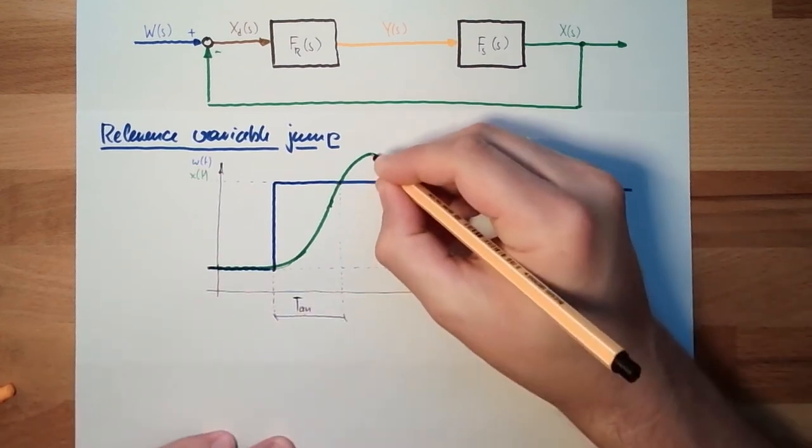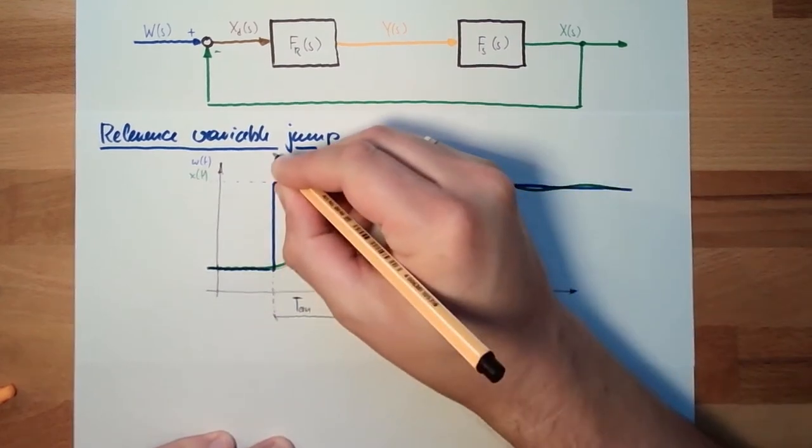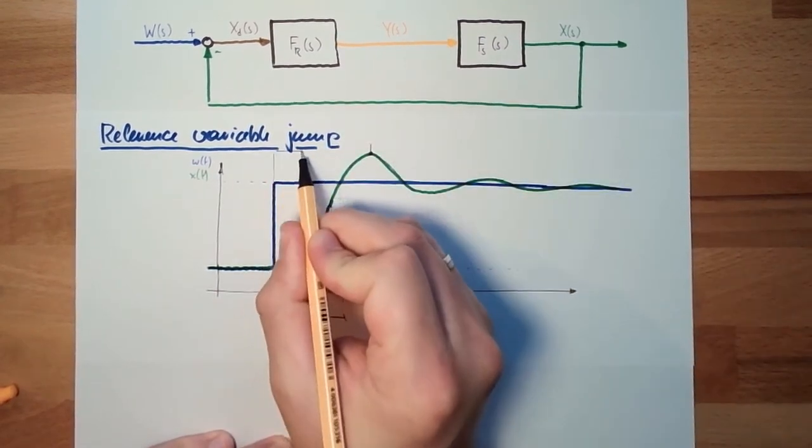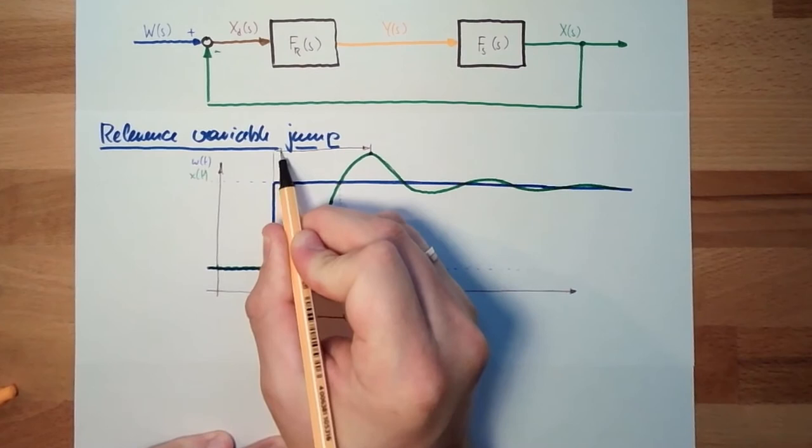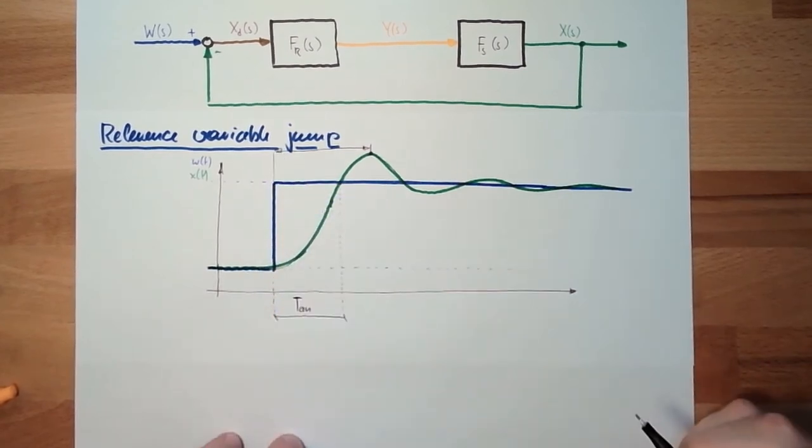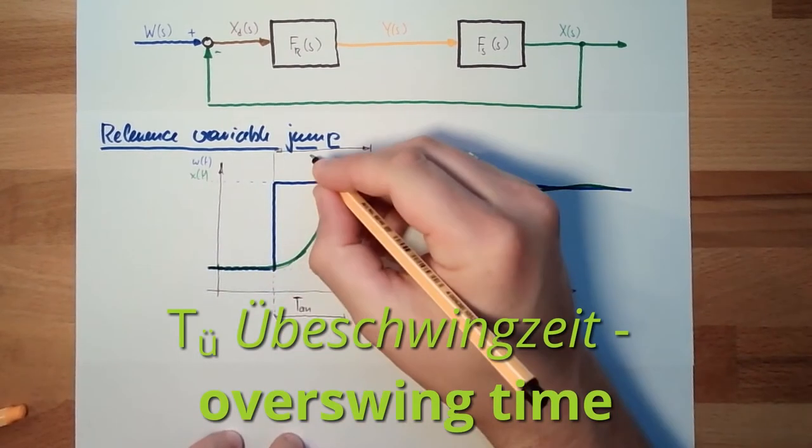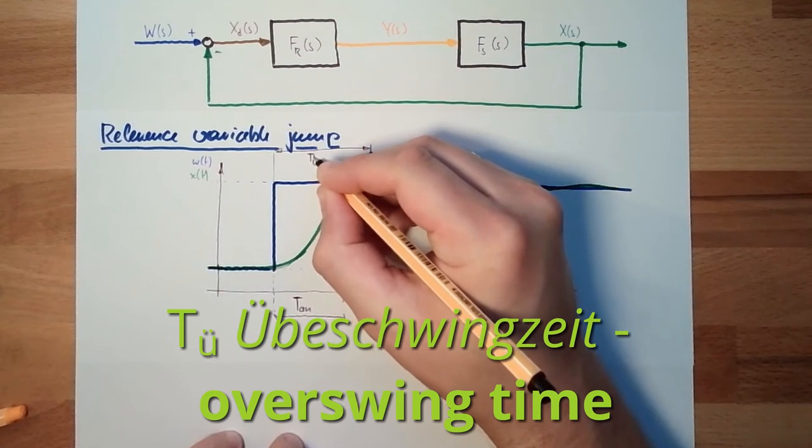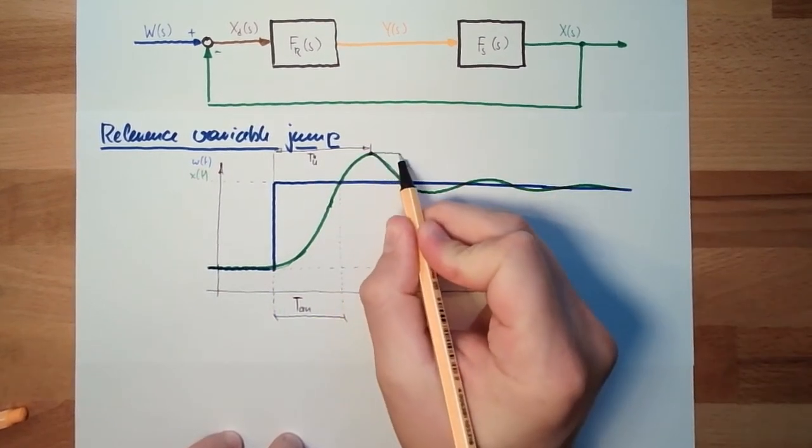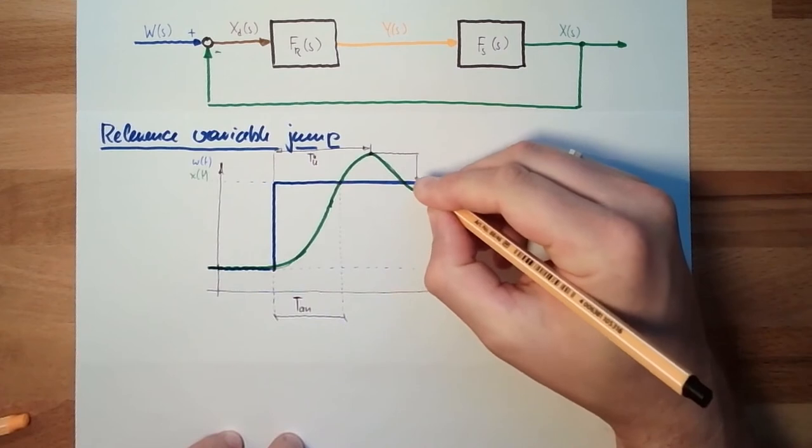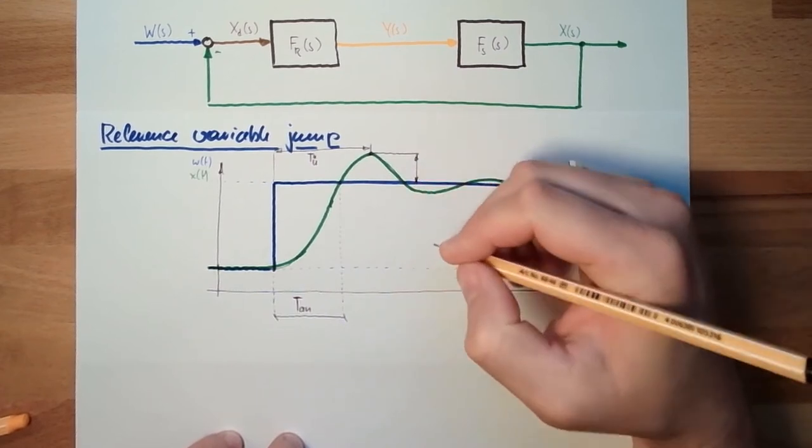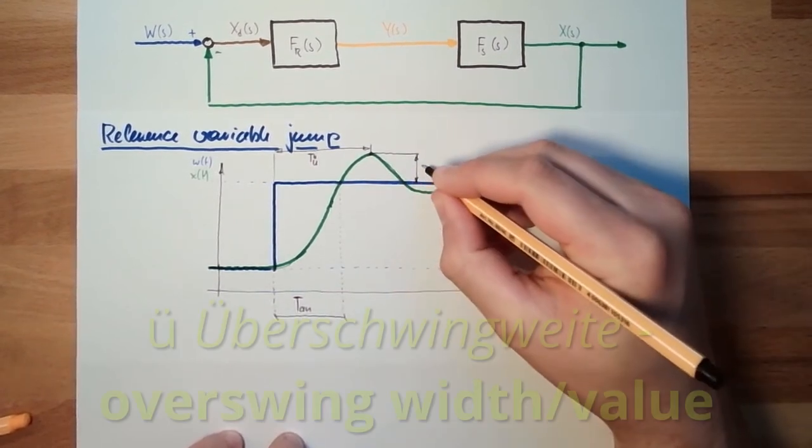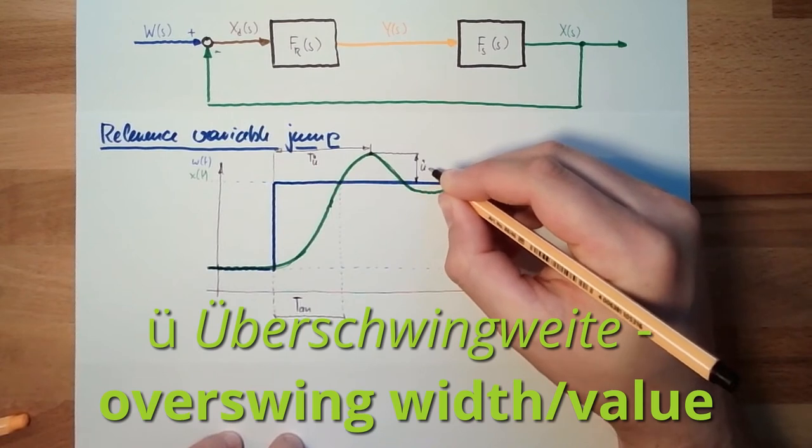Here the time it takes to the overswing, the maximum of the overswing, it's the overswing time or in German Überschwingzeit. The value of the overswing, overswing value, German Überschwingweite.